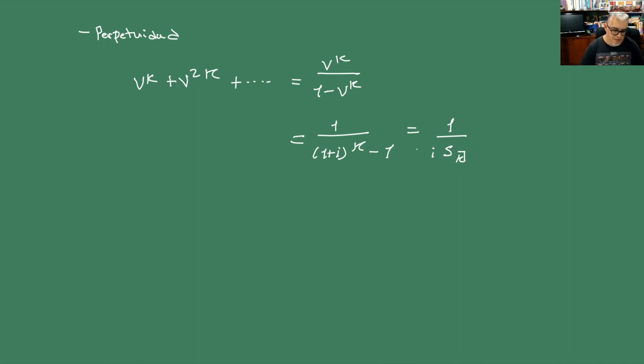Por ejemplo en caso de las perpetuidades, las perpetuidades vamos a tener BK más B2K más... todo esto es igual a BK sobre 1 menos B a la K, y esto es igual a 1 sobre 1 más I a la K menos 1. Y esto es 1 sobre la tasa de interés, perdón, por SK K. Y tenemos un equivalente para las As. Pues vamos a hacer un par de ejemplos más y con eso terminaríamos esta sesión.